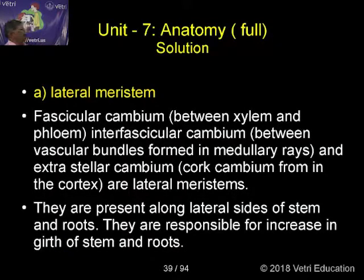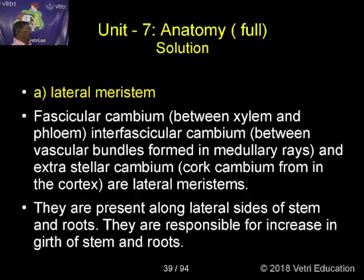Fascicular cambium, that is found between xylem and phloem; interfascicular cambium, found between vascular bundles formed in medullary rays; and extrastelar cambium, that is the corky cambium from the cortex — are examples of lateral meristem.